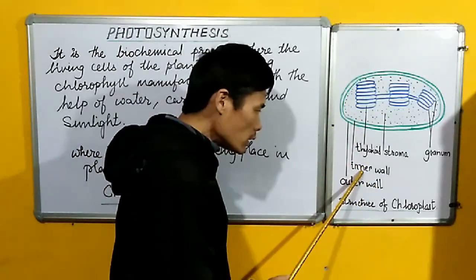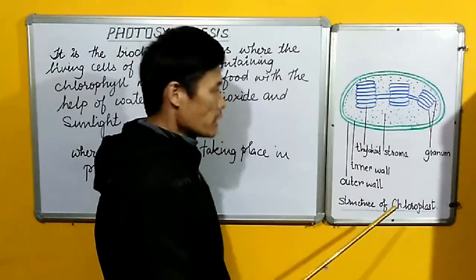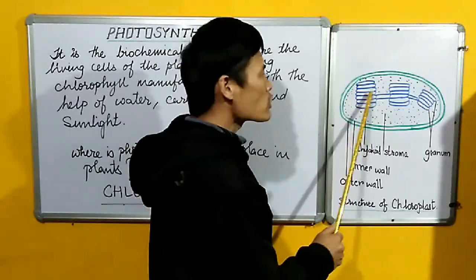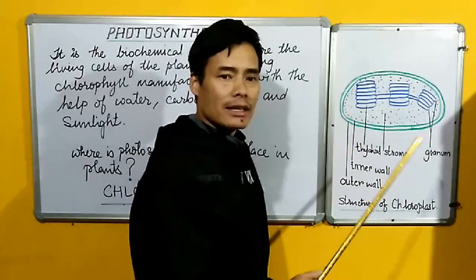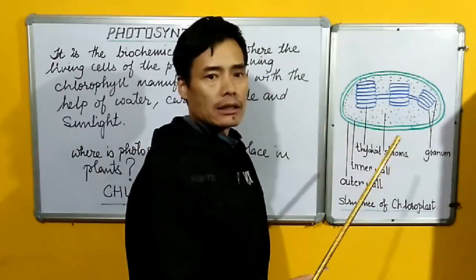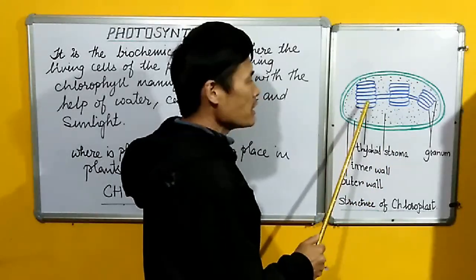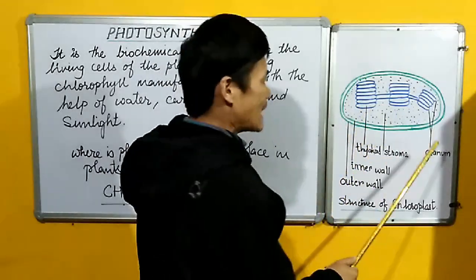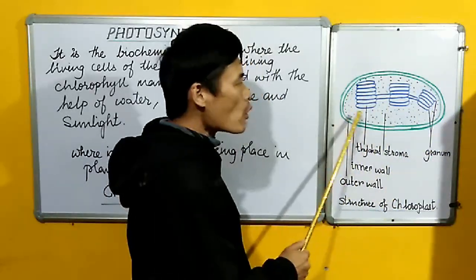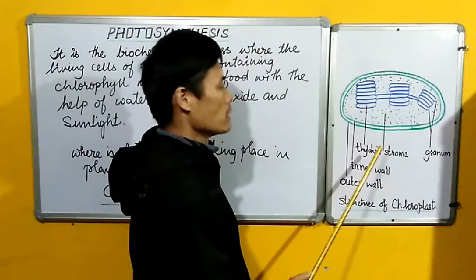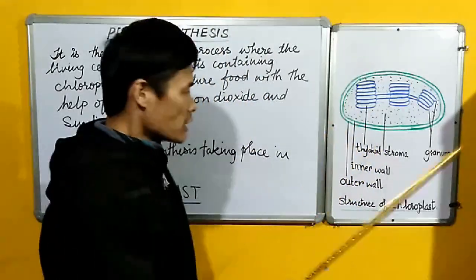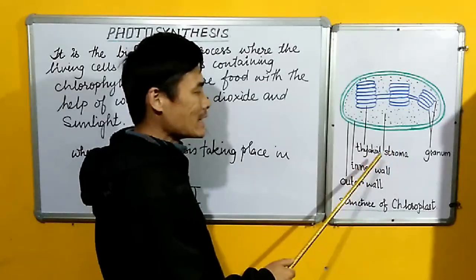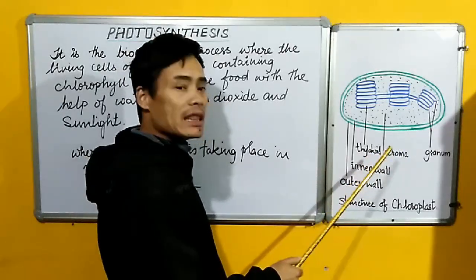It is a double-membraned structure, having an inner wall and an outer wall. Inside the chloroplast there are structures which appear to be coins stacked upon one another, called the granum. The granum is composed individually of structures called thylakoid, where the photosynthetic reaction takes place in the very beginning.